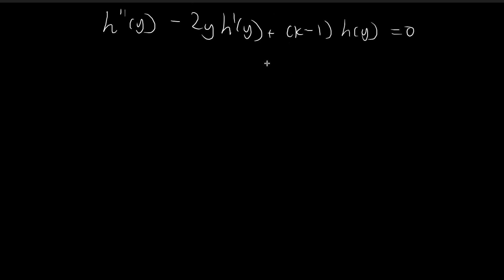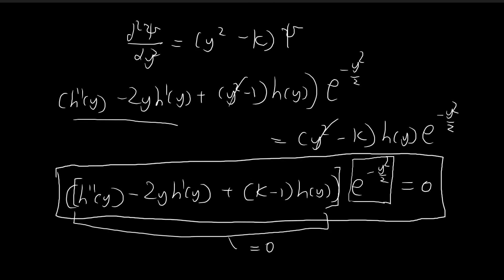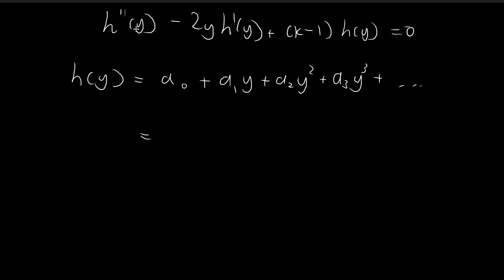So now at this point, all we have to do is to solve this differential equation. And once we find what h of y should be, we can just substitute it back into this expression here to obtain xi of y. We're going to focus on finding solutions that come in the form of an infinite series — a constant plus a constant times y plus a constant times y squared and so on. This is perfectly valid because all we're doing is applying Taylor series, and it's reasonable to assume h of y is a well-behaved function that can be expressed as an infinite series.